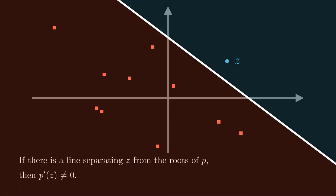I've formalized this notion of z's being outside of the roots of p by saying there's a line that separates the point z from the roots of p. And if there's a line that separates the point z from the roots of p, then p prime of z is non-zero.